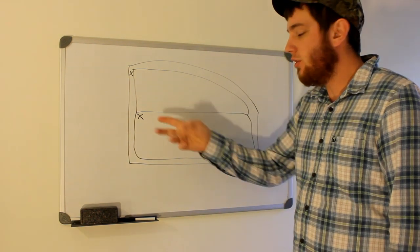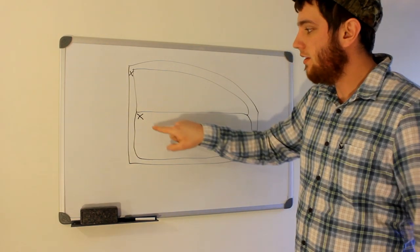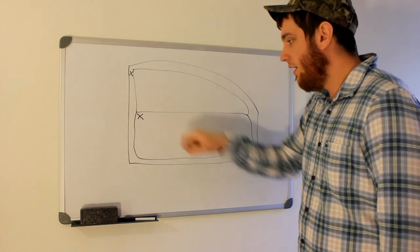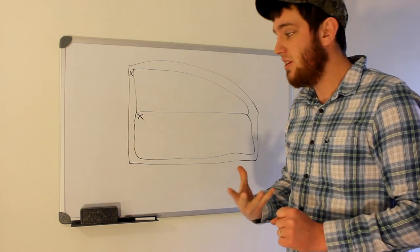There'll be this, they call it a seatbelt guide, I believe, and in this general area, that's where you're going to find your seatbelt guide. And there's going to be two bolts holding your seatbelt guide in.